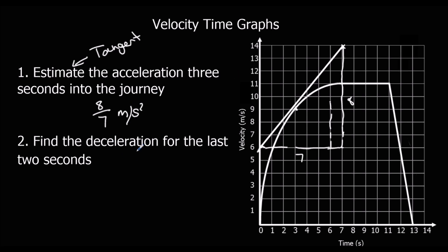Find the deceleration for the last two seconds. Now it's a straight line, so it's a lot easier. For every one it goes across, it goes down 5. So the deceleration is 5 metres per second squared.